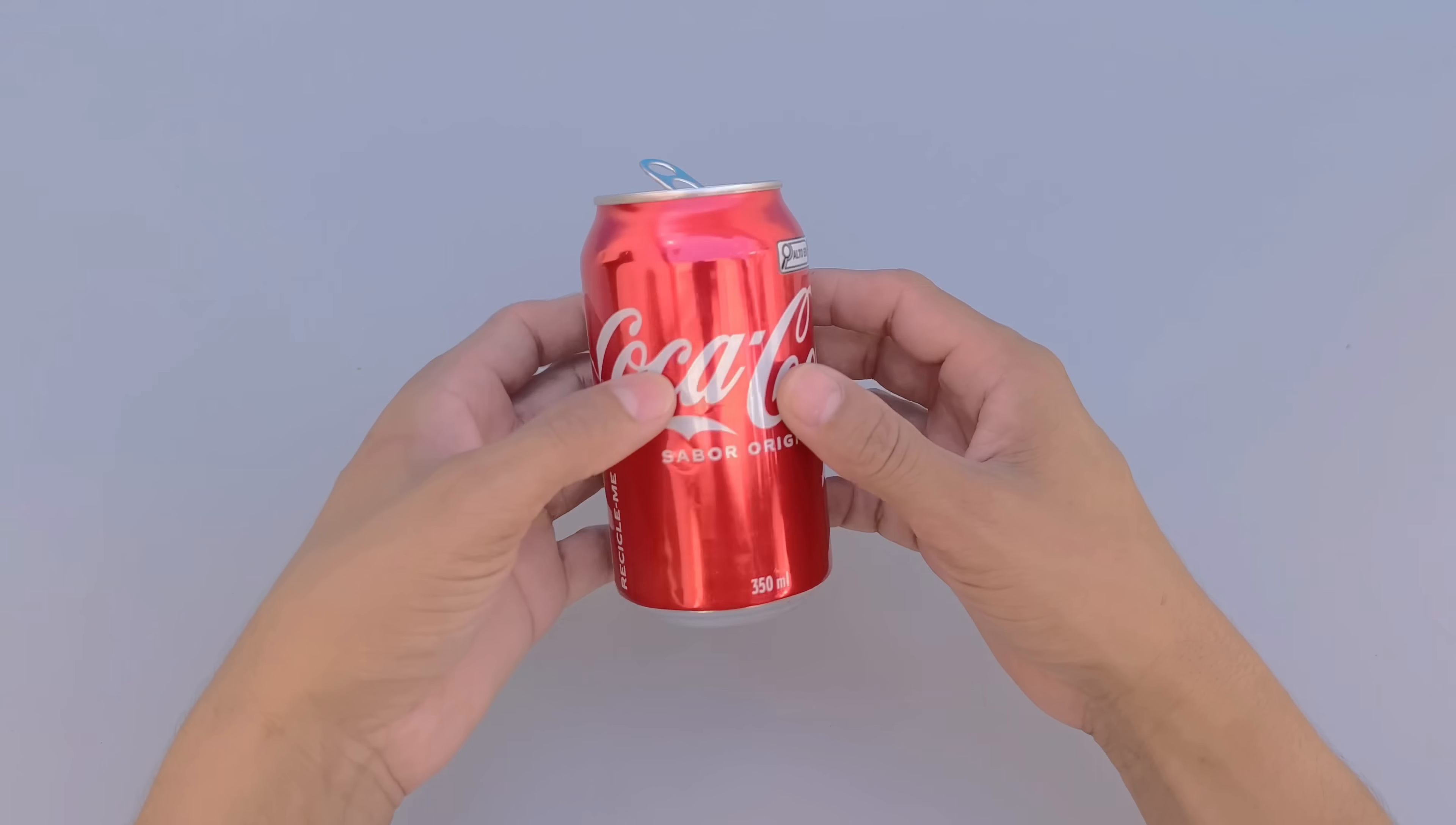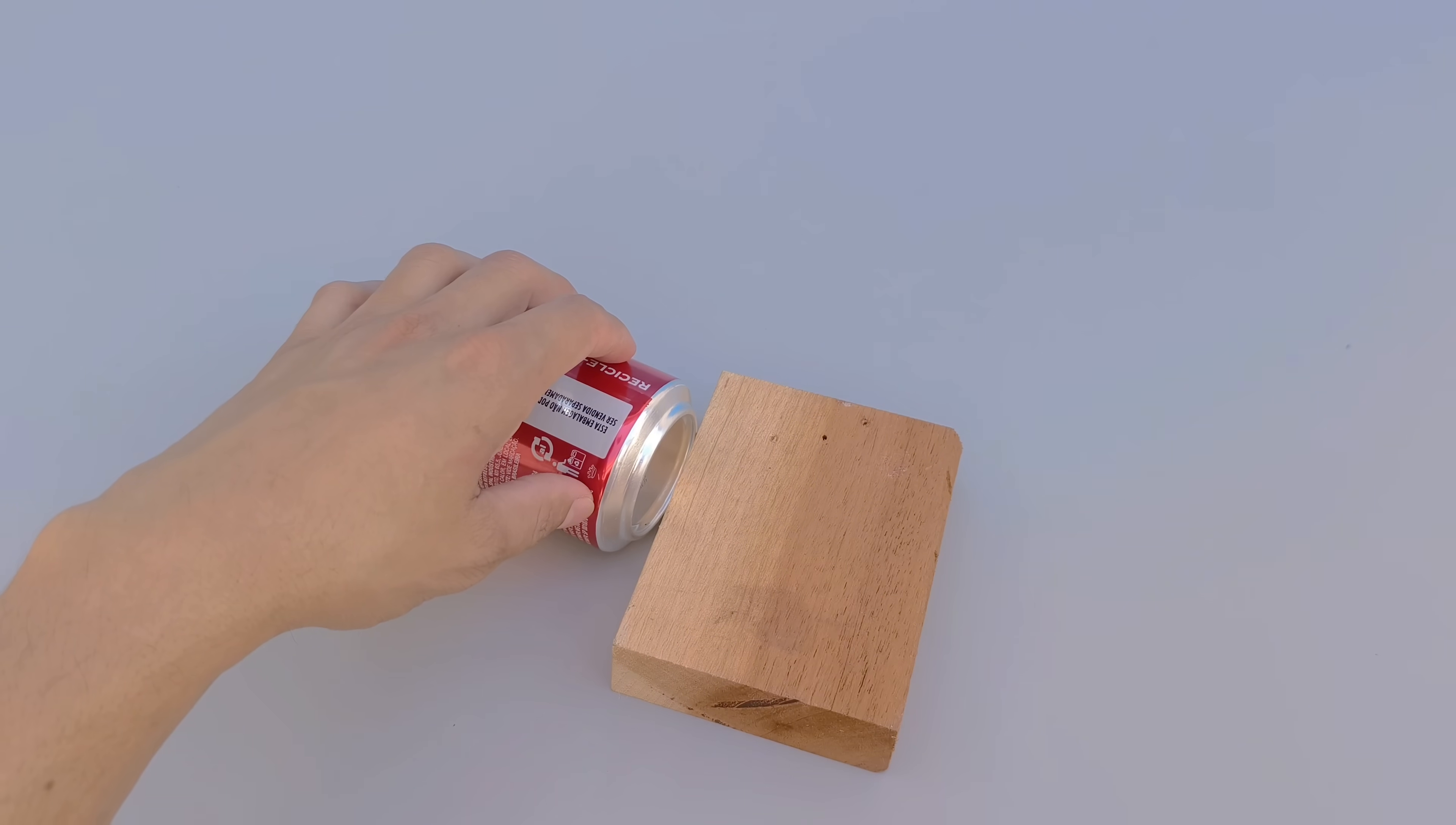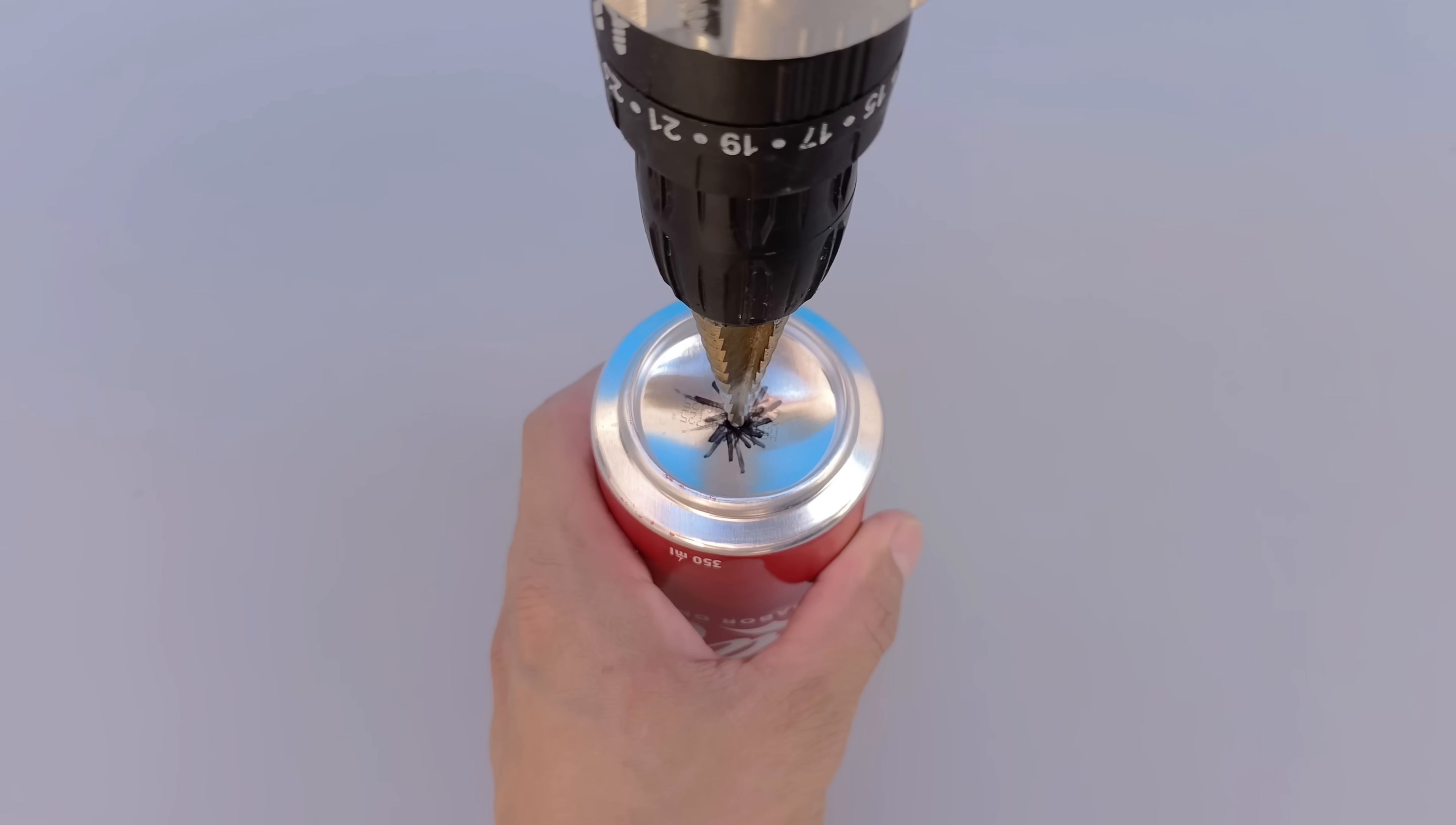Now it's time to use a simple object that almost everyone has at home, an aluminum can. The first step is to precisely mark the center of the bottom of the can, using a ruler, a compass, or any object that helps you find the exact spot, ensuring that the hole is well-centered so as not to compromise the alignment, symmetry, and final result of the piece we are building.